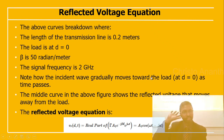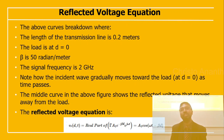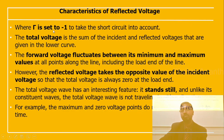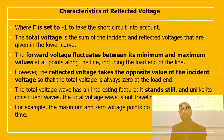These curves are for a transmission line of length 0.2 meters with the load at d = 0, β = 50 radians per meter, and a signal frequency of 2 GHz. The incident wave gradually moves toward the load as time passes. The reflected voltage moves away from the load and is given by VR(d,t) = Re[Γ·A₁·e^(−jβd)·e^(jωt)] = A₁·cos(ωt − βd), with the reflection coefficient set to −1 for the short circuit. The total voltage is the sum of the incident and reflected voltages; the reflected voltage takes the opposite value of the incident voltage so the total voltage is always 0 at the load end.